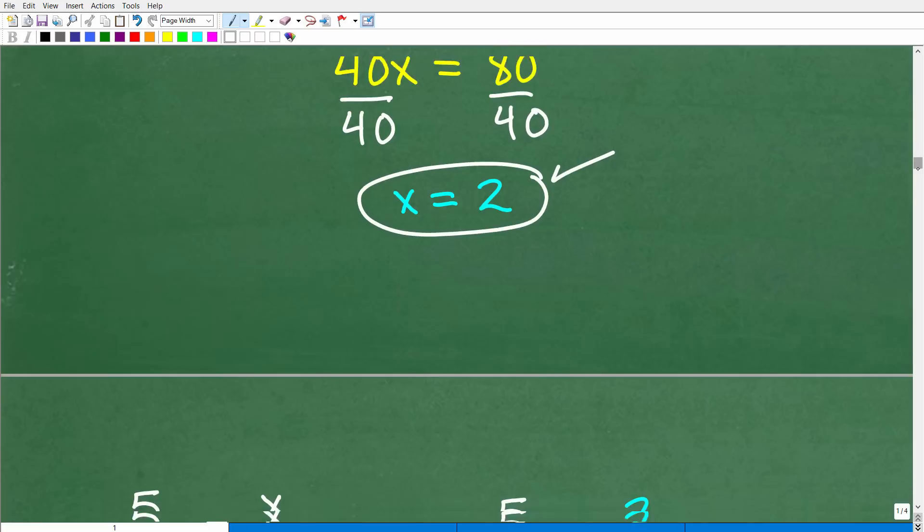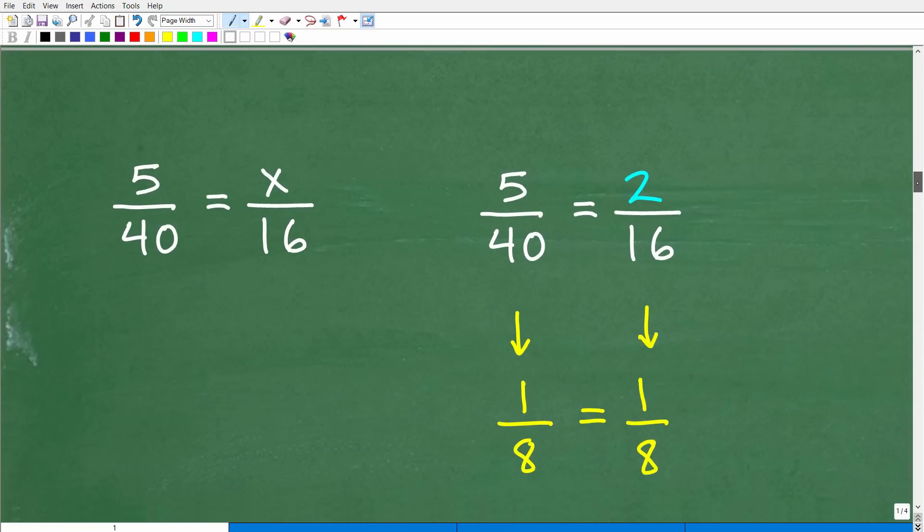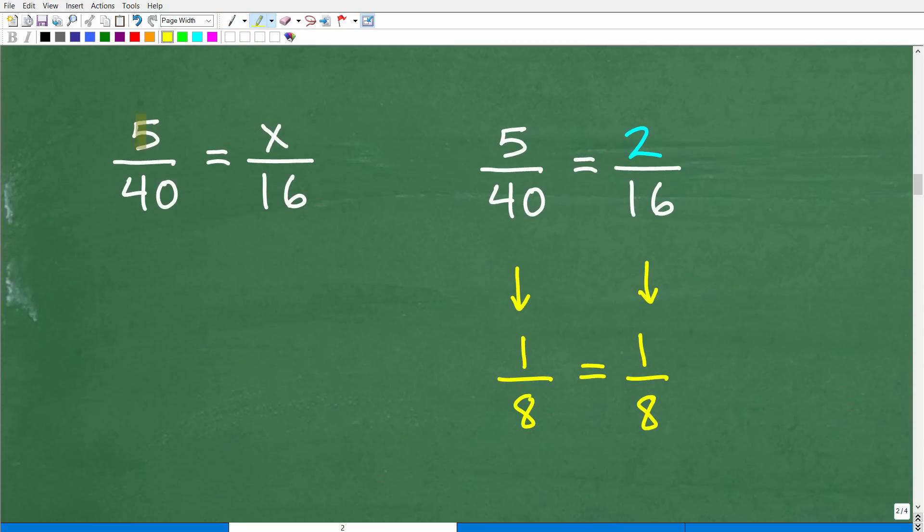But let's go ahead and verify that real quick, just to make sure that we did this correct. So here was our original problem. 5 is to 40 as x is to 16. So we're saying this x is 2. Well, let's kind of plug in a 2 right here. And you can see I've already done that right on this side. So we have 5 is to 40 as 2 is to 16. Is this true? Well, you can see the cross product would, in fact, be true, right? 40 times 2 would be 80. And 5 times 16 would be 80.